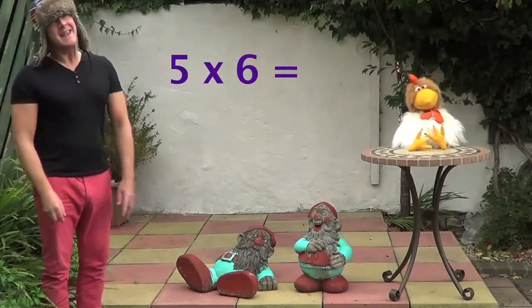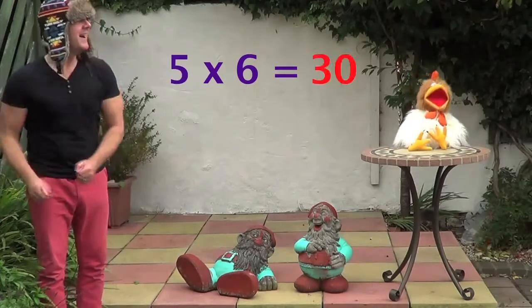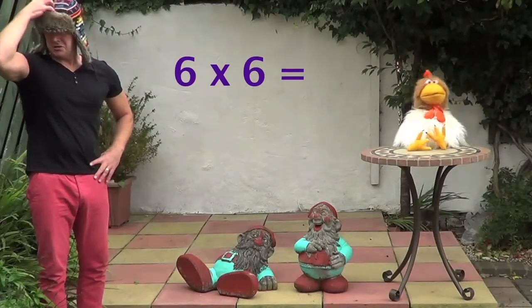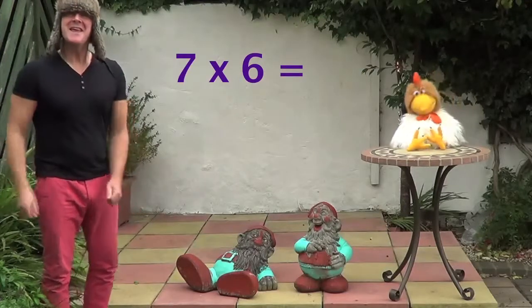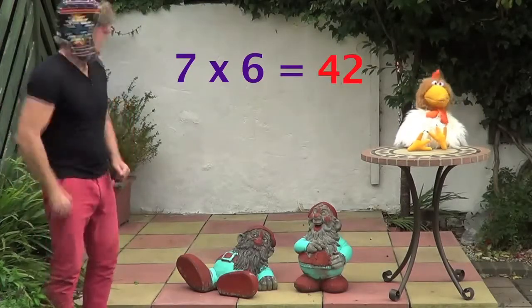4 times 6 is 24. 5 times 6 is 30. 6 times 6 is 36. 7 times 6 is 42.